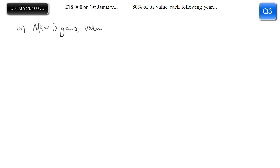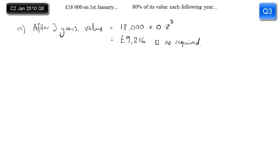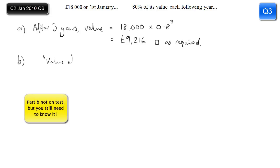The car is losing 20% of its value each year. To lose 20% of your value you multiply by 0.8. That happens for three years, so it's 0.8 cubed — you've done this sort of thing at GCSE so it isn't too much of a leap. Plug it into the calculator and you get exactly the answer they're asking for.